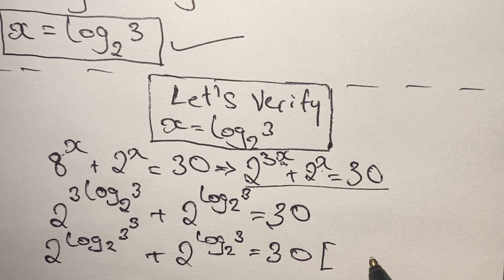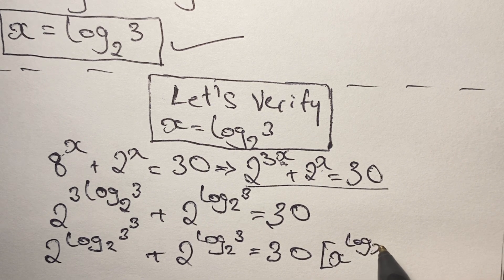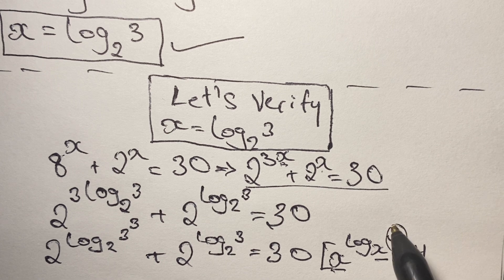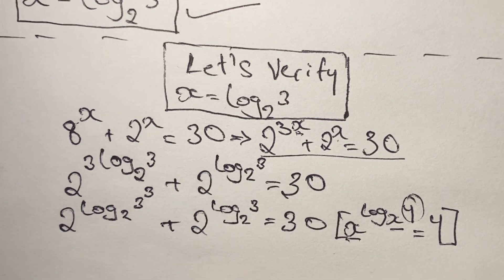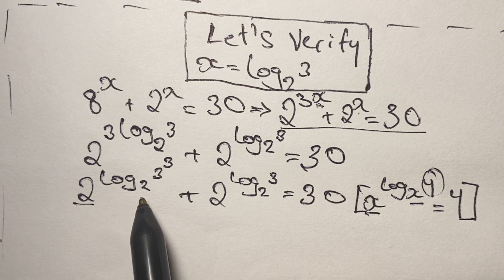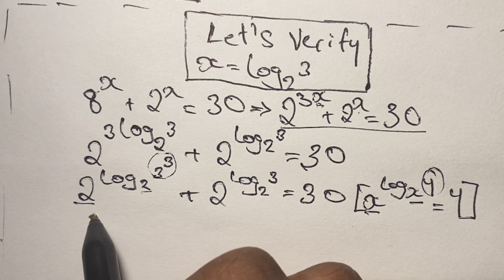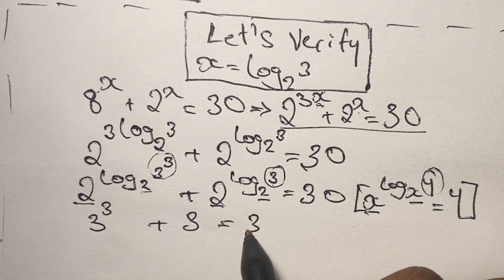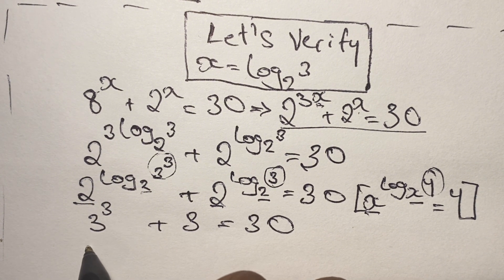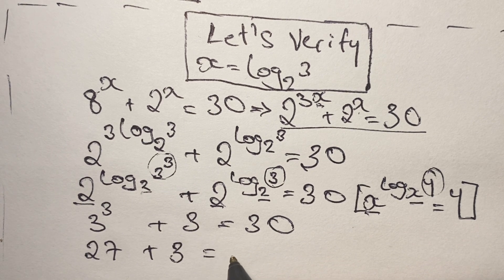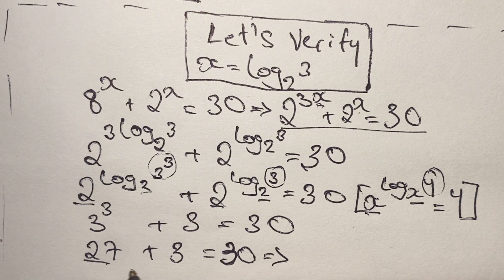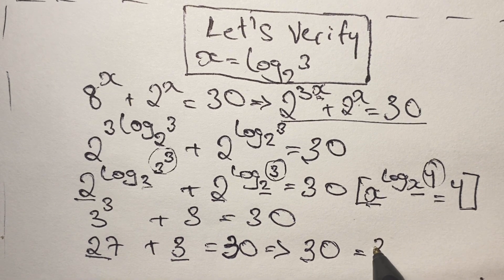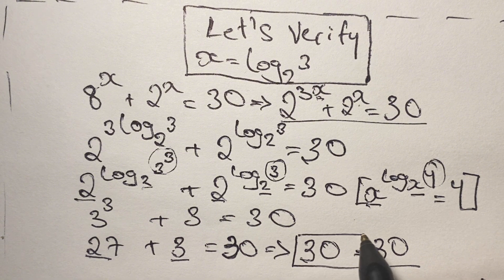Applying the rule x to the power of log base x of y equals y, where we have the same base, we get 3 to the power of 3 plus 3 equals 30. We know 3 cubed is 27, so 27 plus 3 equals 30 — which is true. Our solution x equals log base 2 of 3 is verified.